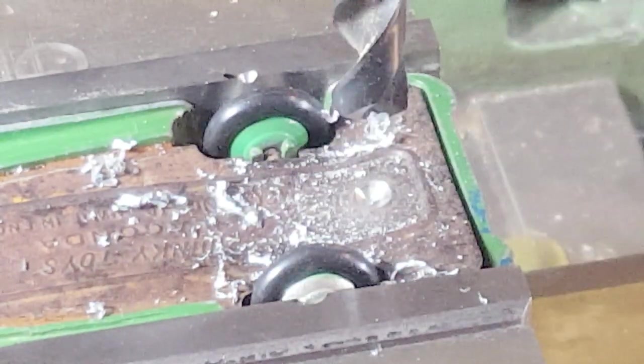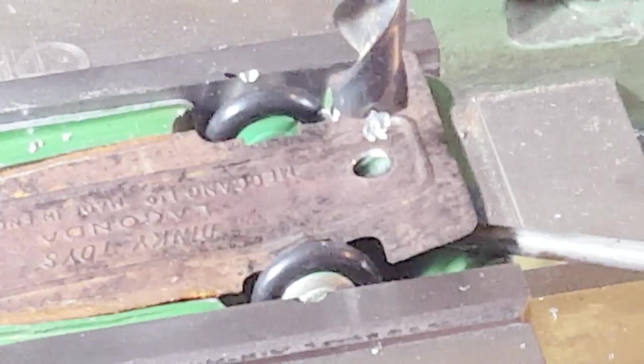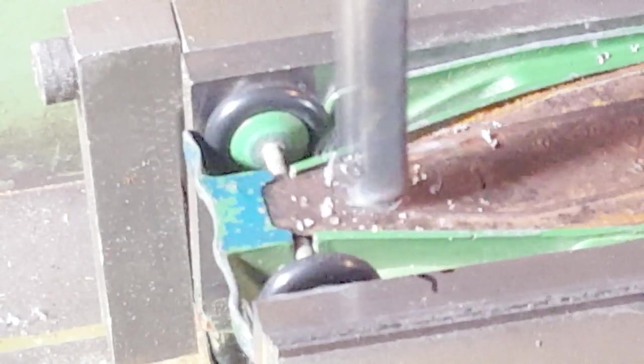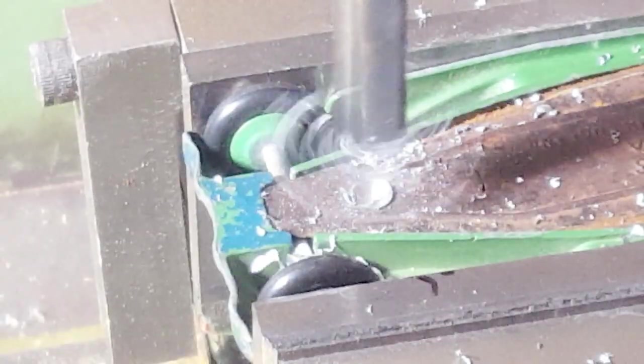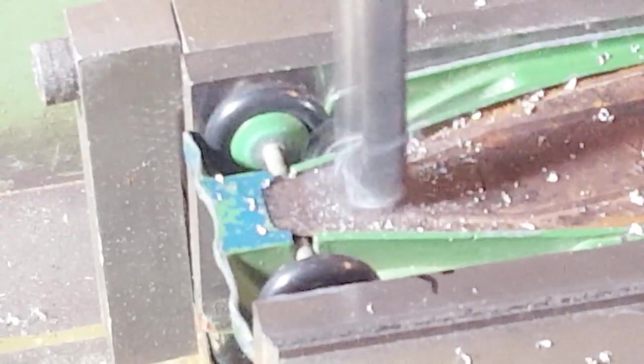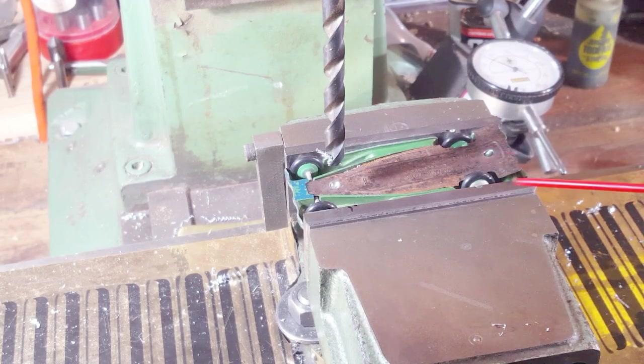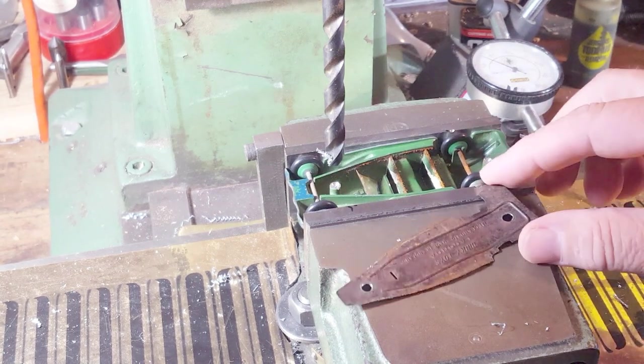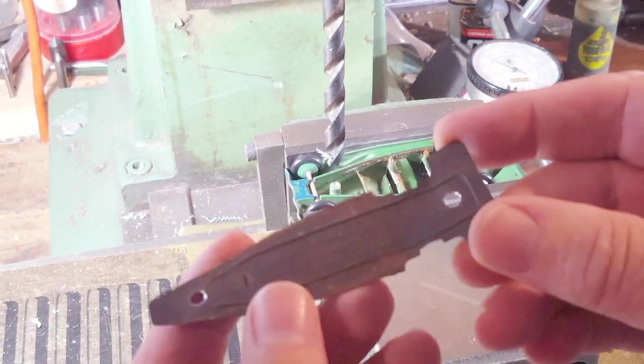It easily pops off. You can see the base is pretty much damaged and very rusty. Again I go in until all the rivet is gone.